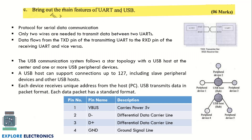The next question asks you to bring out the main features of UART and USB, for six marks — three marks each. For UART, draw the block diagram showing the transmitter (TXD) and receiver (RXD) pins, with the transmitter of one device connected to the receiver of the other. For USB, explain the architecture, the pins present in the USB port, differential data signaling, and the number of connections it supports.